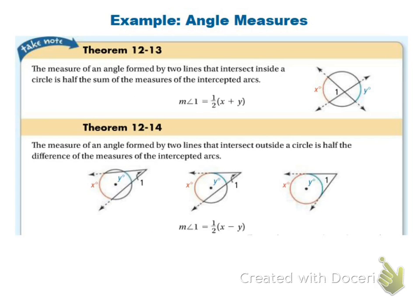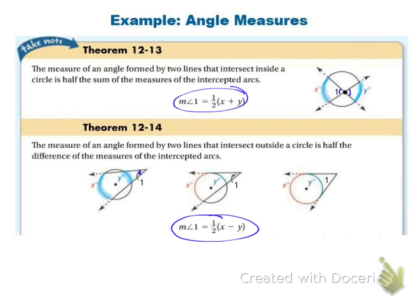Here are a couple of formulas for when an angle happens with two chords that are not in the center and the vertex doesn't happen on the outside of a circle. If the angle happens inside the circle, you add together the two corresponding arcs and divide by two. If the angle happens outside the circle, you take the far arc minus the near arc and divide by two.